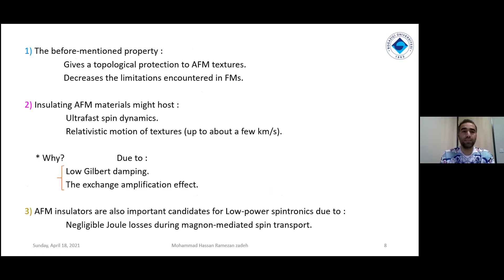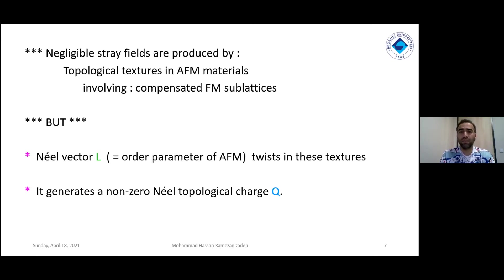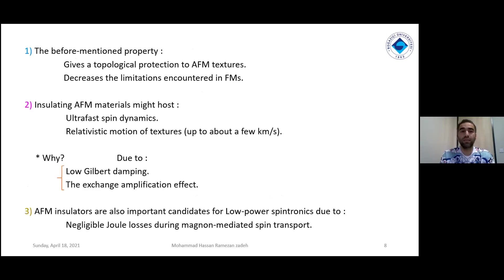In these textures, it generates a non-zero Néel topological charge, which is called Q. About antiferromagnetism, we named some properties which give topological protection to the antiferromagnetic textures. Also, it decreases the limitations we have in ferromagnetic materials. Insulating antiferromagnetics help the ultra-fast spin dynamics, which is very interesting, and the electric motion of textures.